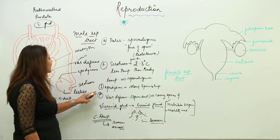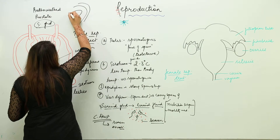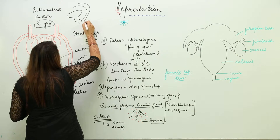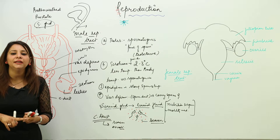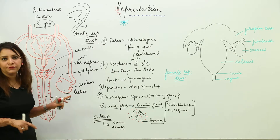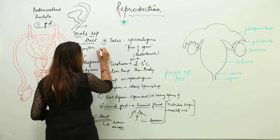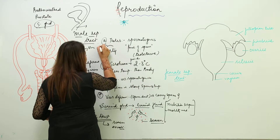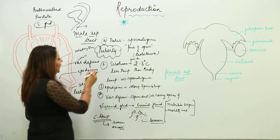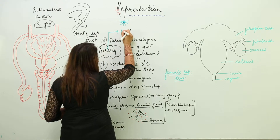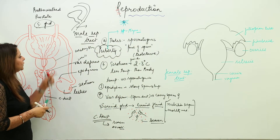The vas deferens combines with the urethra to form a common duct for secretion of semen and excretion of urine. Sperm formation in males begins at puberty, which is the stage when the organism becomes sexually mature. Puberty in males occurs around 14 to 15 years of age, though it varies.